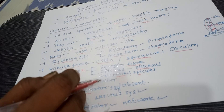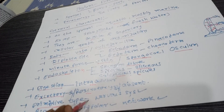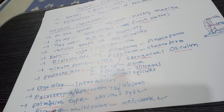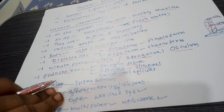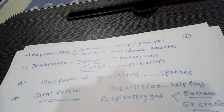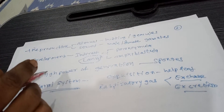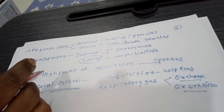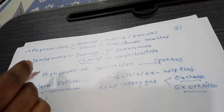A primitive type of nervous system is present. Bipolar or multipolar cells form a network found in sponges.